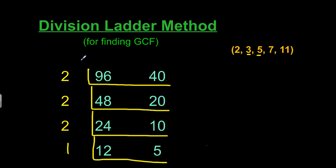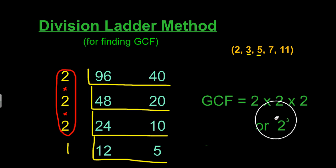We can circle all of the common factors between these two numbers. If you multiply these together, we will end up with our greatest common factor. For this problem, the greatest common factor is 2 times 2 times 2, or 2 to the third power, which equals 8.